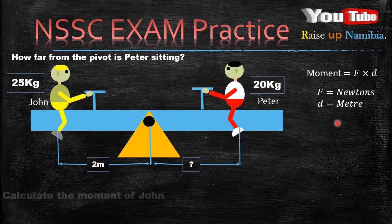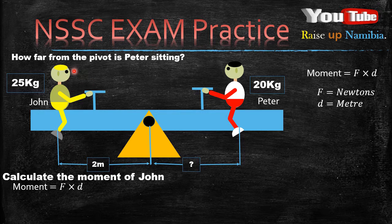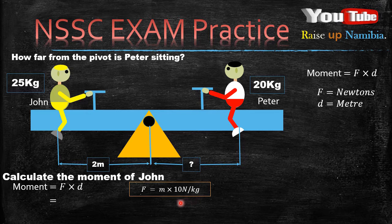Let's quickly see how to use this formula to calculate the moment of John. We start with the formula: moment equals force multiplied by distance. Are we given John's force? No, we don't have his force, but we are given his mass which is 25 kilograms, so we can use this mass to calculate his force.